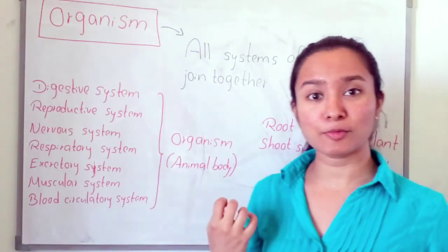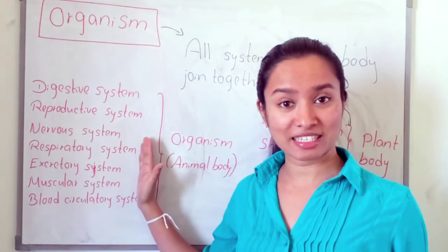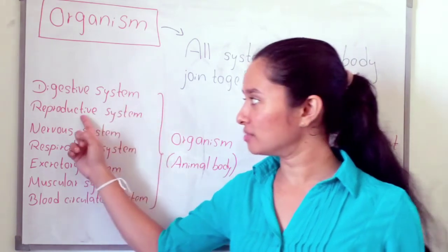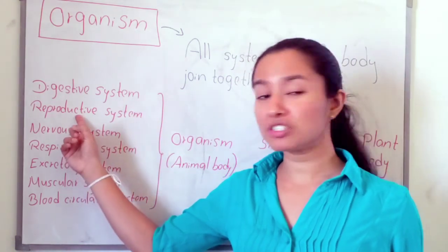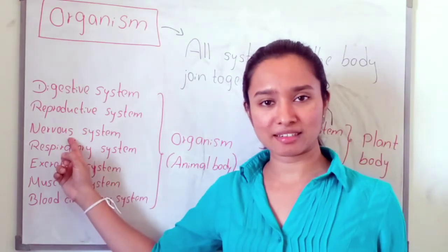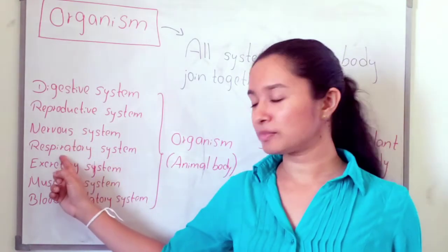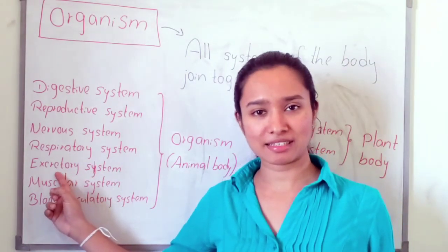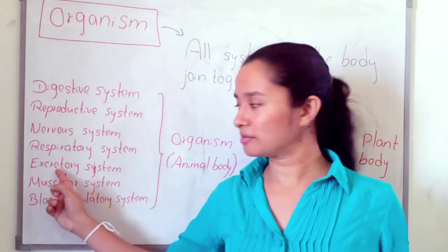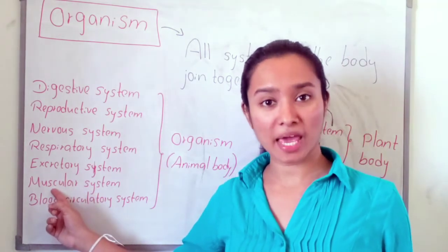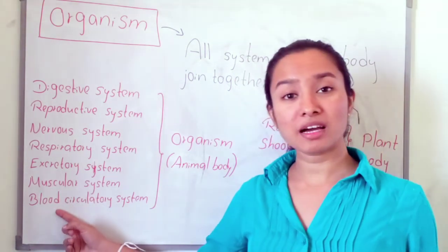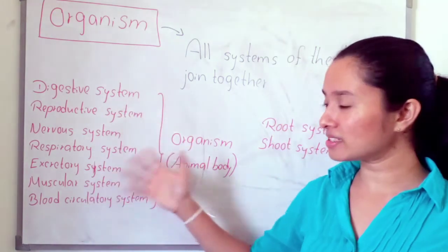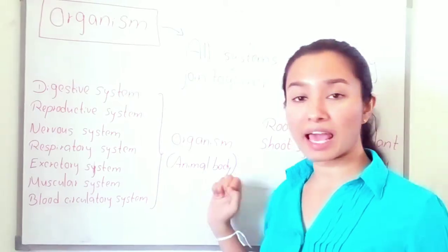There are seven systems in the animal body: digestive system (aharjeevna paddhatiya), reproductive system (phrajanaka paddhatiya), nerve system (snay paddhatiya), respiratory system (shosana paddhatiya), excretory system (bahisraviya paddhatiya), muscular system (peshi paddhatiya), and blood circulatory system (trudhira samsarana paddhatiya).